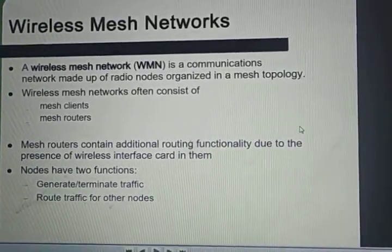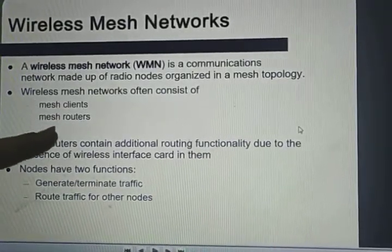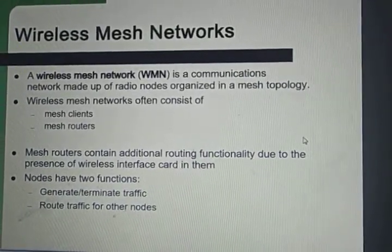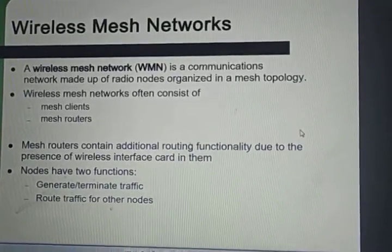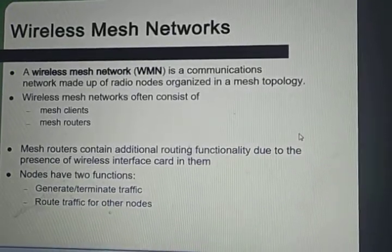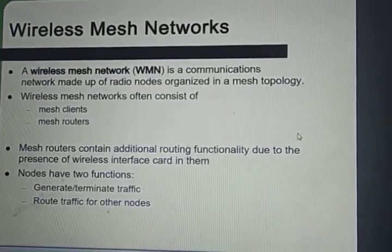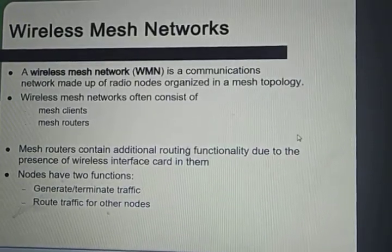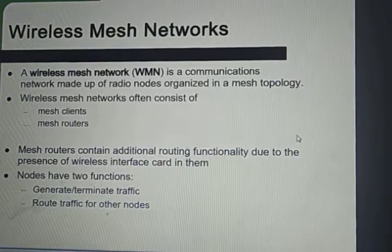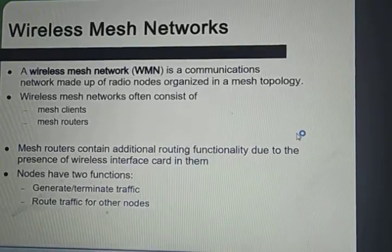The wireless mesh network consists of two main components: mesh clients and mesh routers. The mesh clients are the terminal devices to which the wireless mesh network backbone provides connectivity, whereas the mesh routers are usually stationary and connected to each other by wireless links in an ad-hoc manner to form a network backbone. These mesh routers direct data traffic from one node to another.